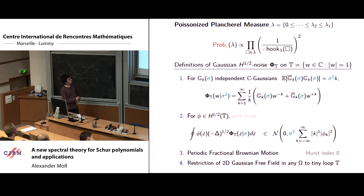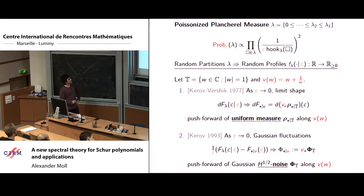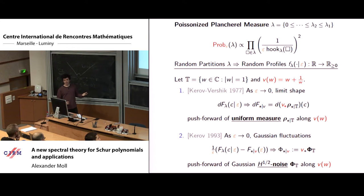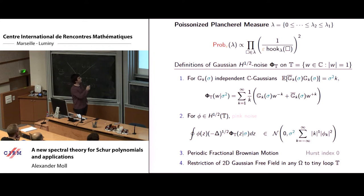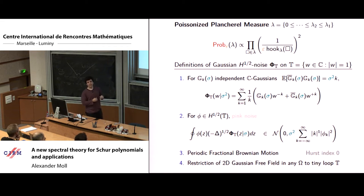This H^{1/2} noise can also be described as periodic fractional Brownian motion or the restriction of a Gaussian free field to a small loop. But what about this model? If I go back to this result, the limit shape is described in terms of 2 cosine x, and the fluctuations are described in terms of 2 cosine x. But what does the model have to do with 2 cosine x? Those are questions I like. Let's at least review some reasons to care about this model.